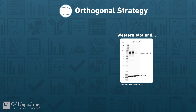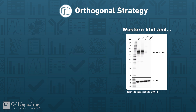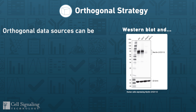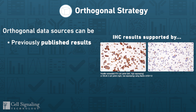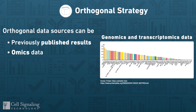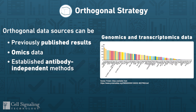We use orthogonal strategies to complement information obtained from established models. Non-antibody information from previously published studies, expression information mined from RNA or mass spectrometry databases, or other methods can be used to cross-reference and support antibody validation results obtained using other strategies.